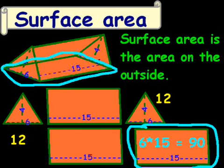Now, the bottom, we know that the base is 6, and we can multiply that times 15. So 6 times 15 is 90. So we know that the bottom is 90.